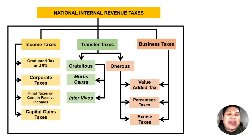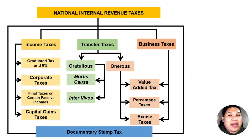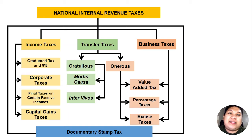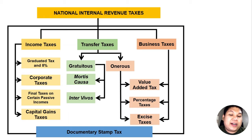The national government also imposes one last tax: the documentary stamp tax. This is imposed on every transaction entered into by any taxpayer, especially when the transaction is in writing. For example, when you graduate and secure a diploma from your school, that diploma needs to have a documentary stamp tax. Any document filed with or to the government should contain a documentary stamp tax. We will also discuss this in future videos.